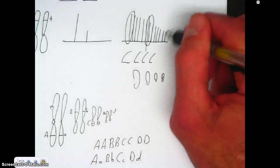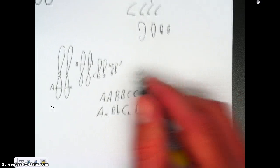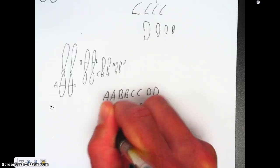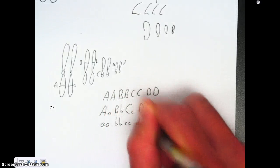What would this person be for a genotype? Using polygenic inheritance, we would say that this person could be little a little a, little b little b, little c little c, and little d little d.